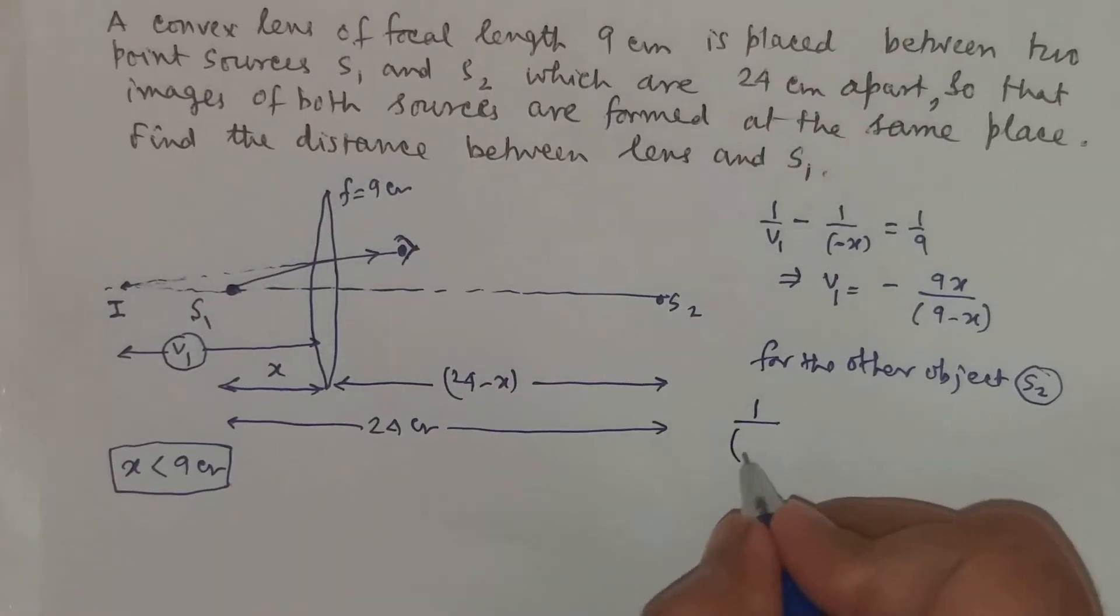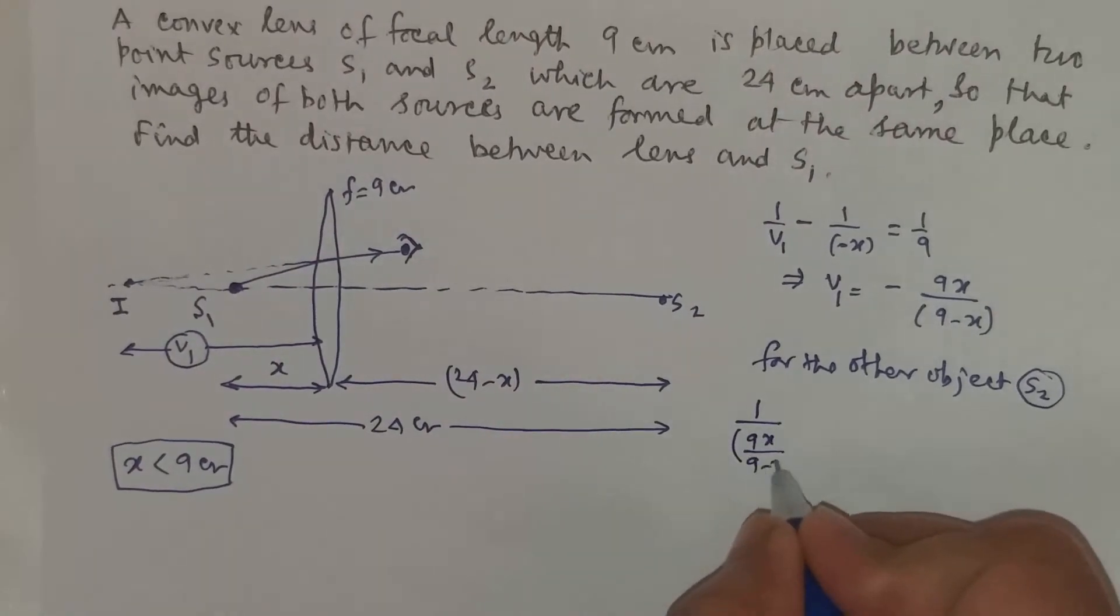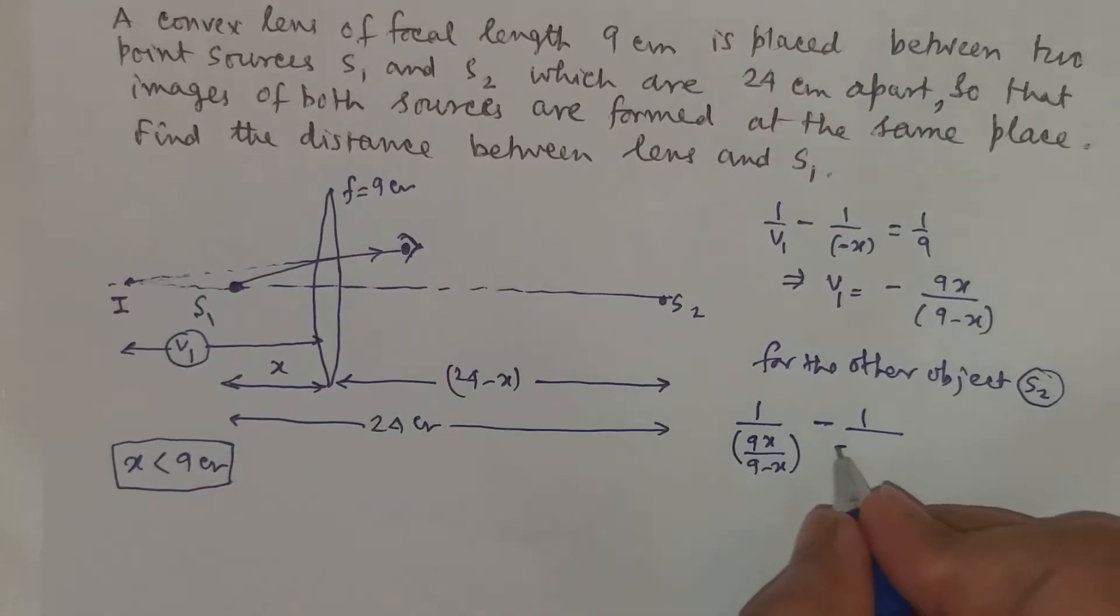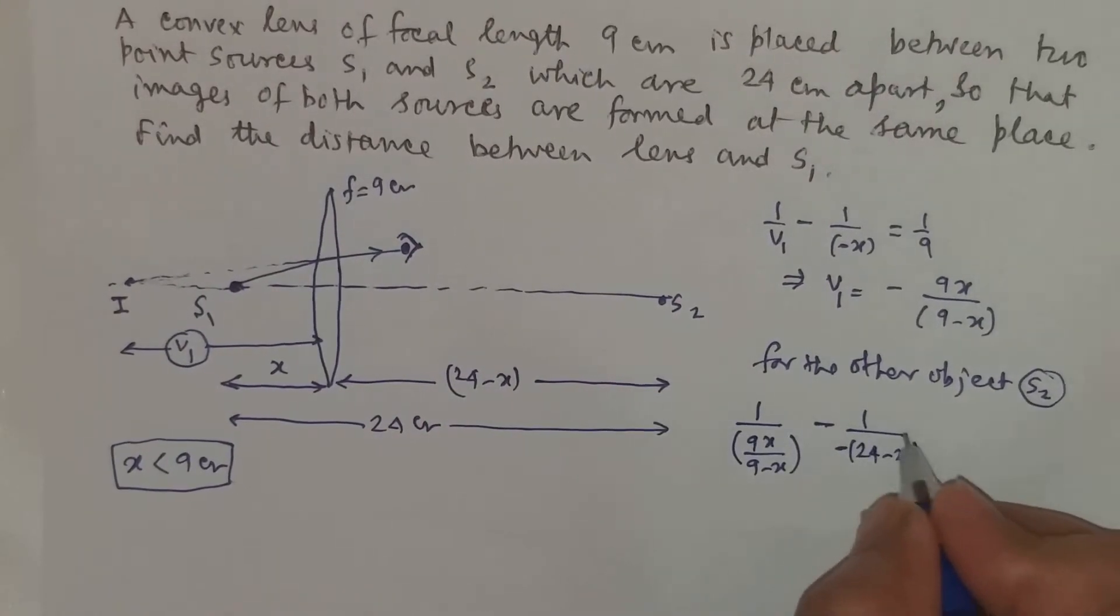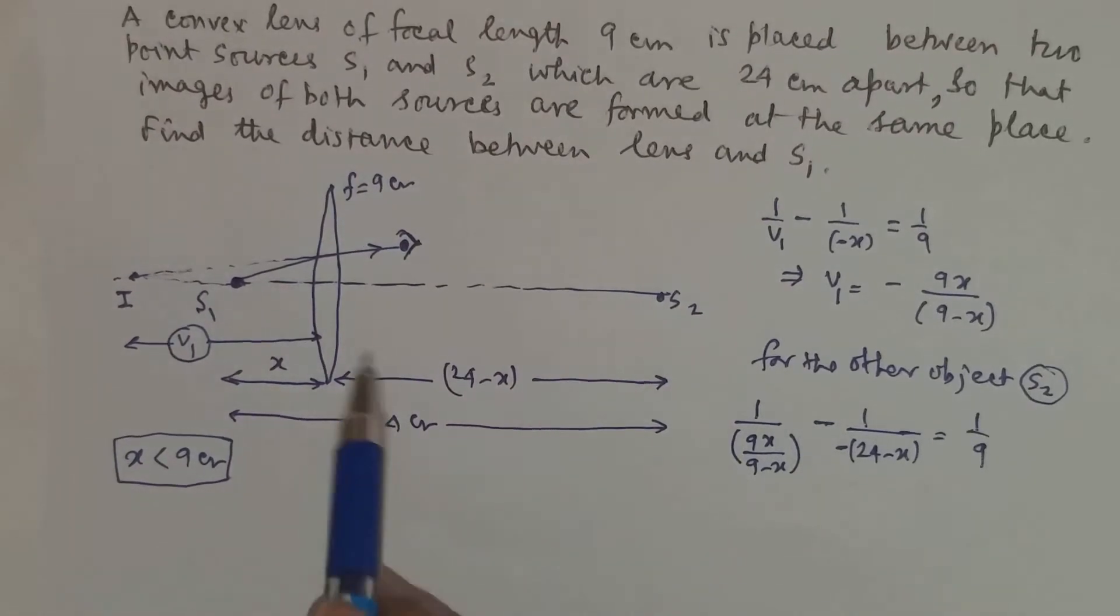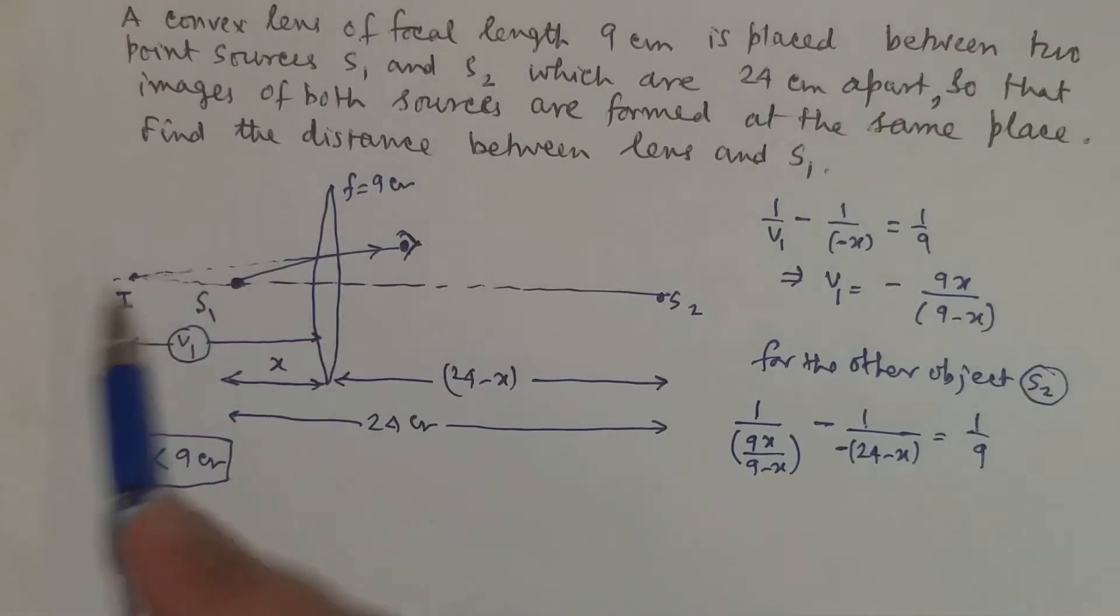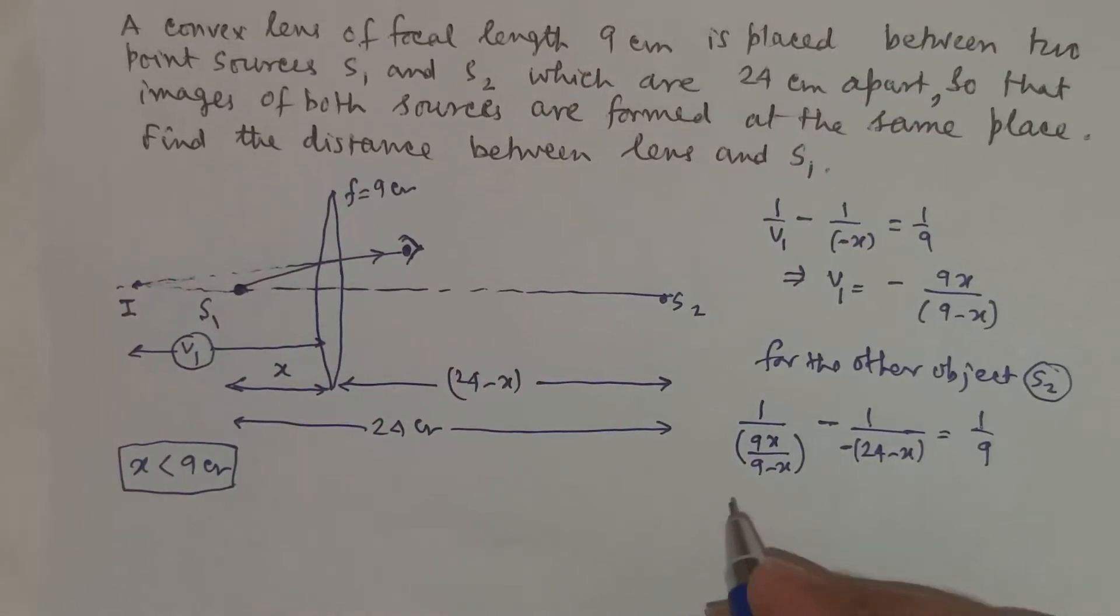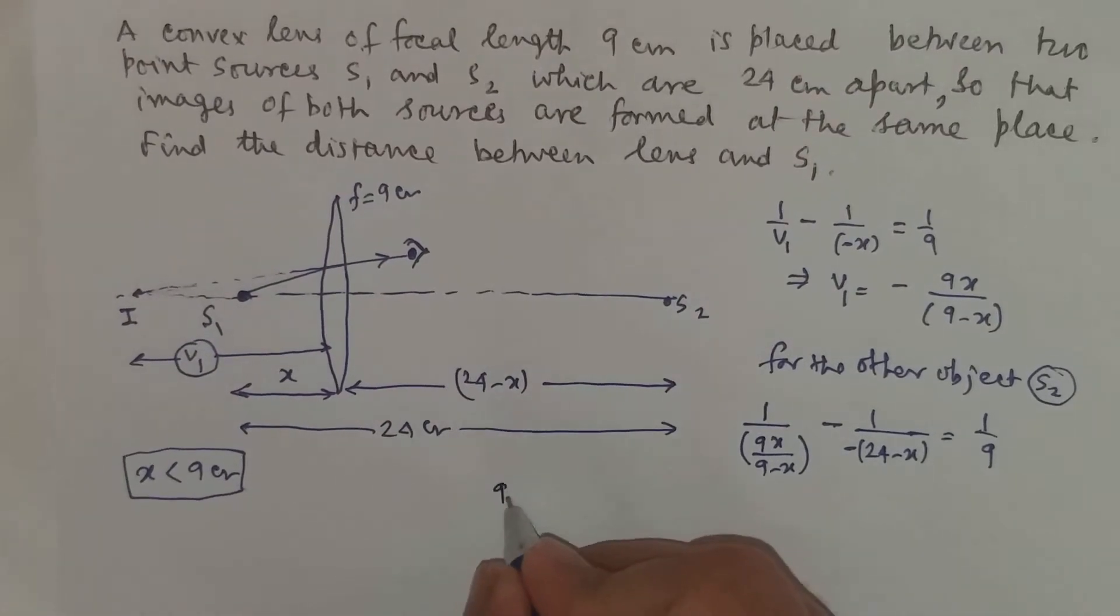So 1 by V, V will be 9x by 9 minus x, minus 1 by U, U will be negative of 24 minus x, is equal to 1 by F. Please be informed that I am taking this as the negative side, this as the positive side. So you can work out by cross multiplication.